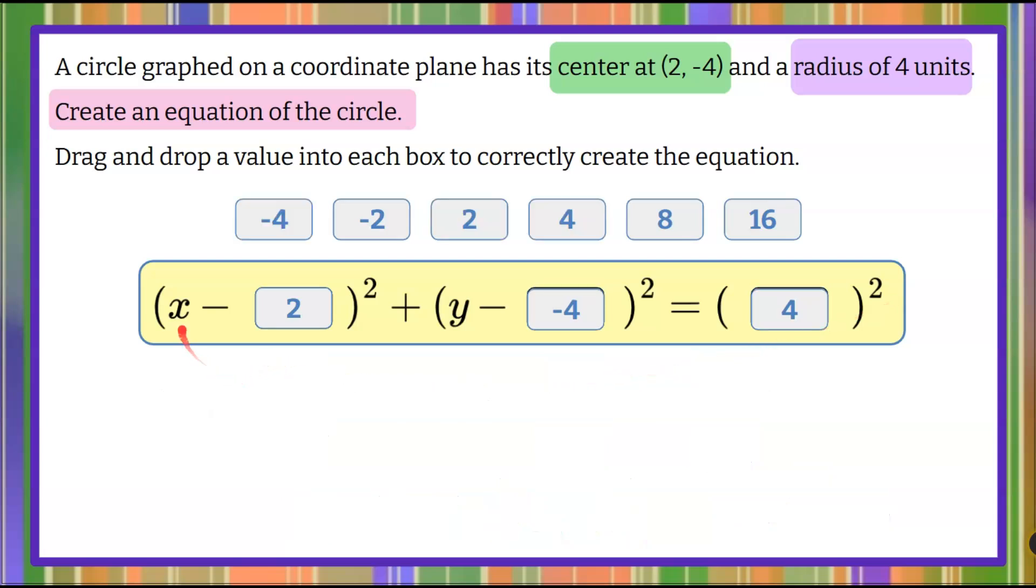Now let's clear our work. So our equation is x subtract 2 squared, add y subtract negative 4 squared, equals 4 squared.